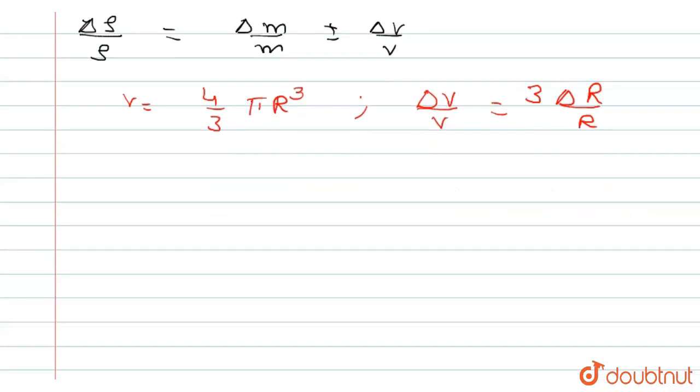Now we substitute this value, which is del rho by rho is equal to del m by m plus 3 into del R by R.